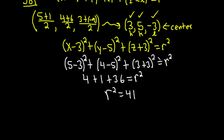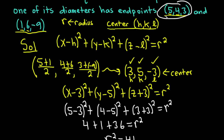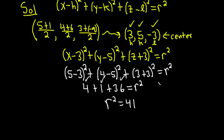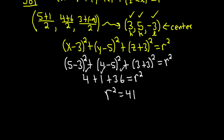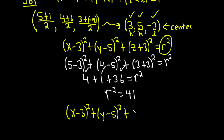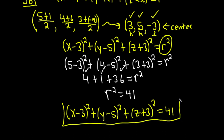Let's double-check: 5 - 3 = 2, squared is 4. 4 - 5 = -1, squared is 1. 3 + 3 = 6, squared is 36. Then 4 + 1 + 36 = 41. So our final answer, replacing r² with 41, is: (x - 3)² + (y - 5)² + (z + 3)² = 41.